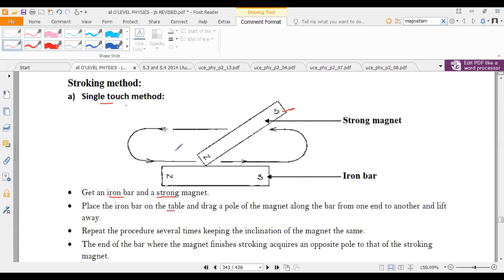Then you use the strong magnet to drag it from one end of the bar to another and lift it away, moving in this direction as you can see from the arrows.